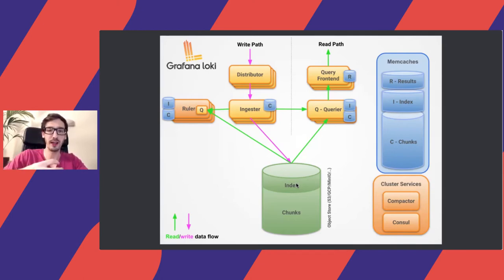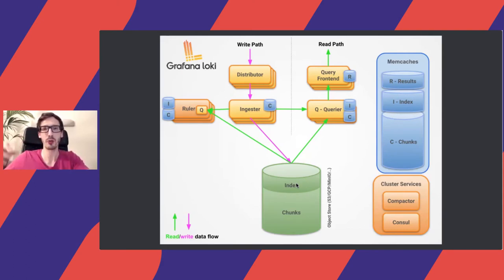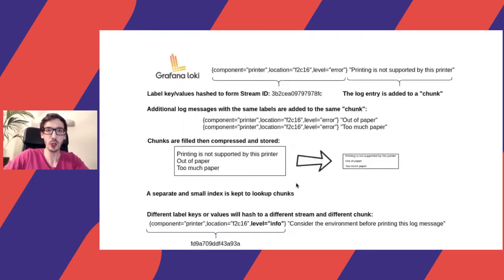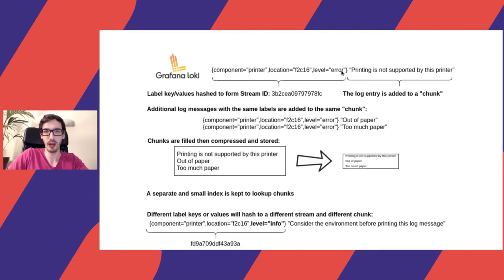By taking these trade-offs — having chunks and indices, and potentially some result caching — you can get very good results while avoiding some things Lucene does that are not strictly necessary for the log use case. Loki uses a key-value hash that forms the so-called data stream ID. For example, if the component is the printer, in a specific location, grouped by log level, you take those three attributes, hash them together, and that's the stream ID. All log messages for this stream end up in a chunk based on that ID, and then you compress the chunk and store it on an object store.